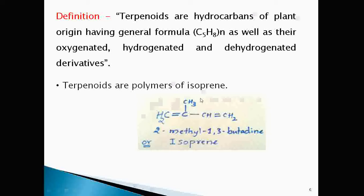So, terpenoids are polymers of isoprene. This is the structure of isoprene that is 2-methyl-1,3-butadiene.